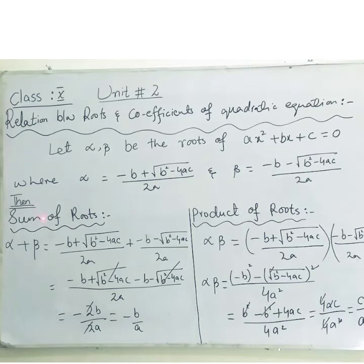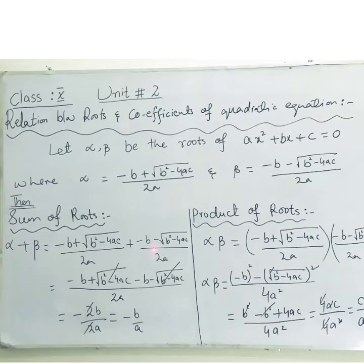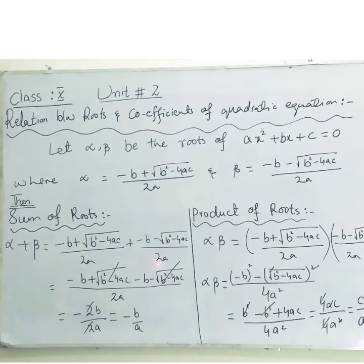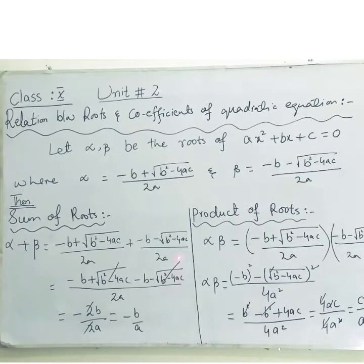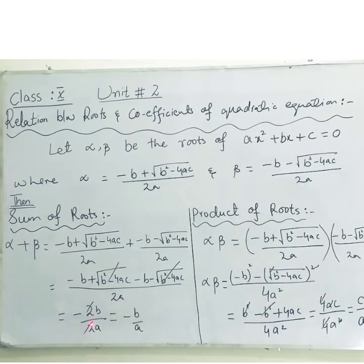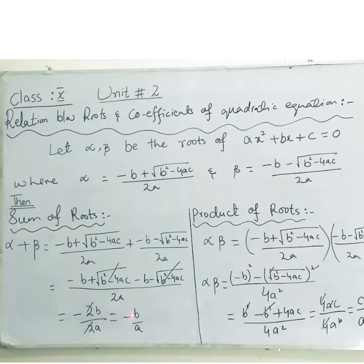The sum of roots alpha + beta is found by adding the values of alpha and beta. With 2a as the LCM, we get (-b + √(b²-4ac) - b - √(b²-4ac)) / 2a. The +√(b²-4ac) and -√(b²-4ac) cancel out, leaving -b - b = -2b divided by 2a. The 2s cancel, giving us -b/a.